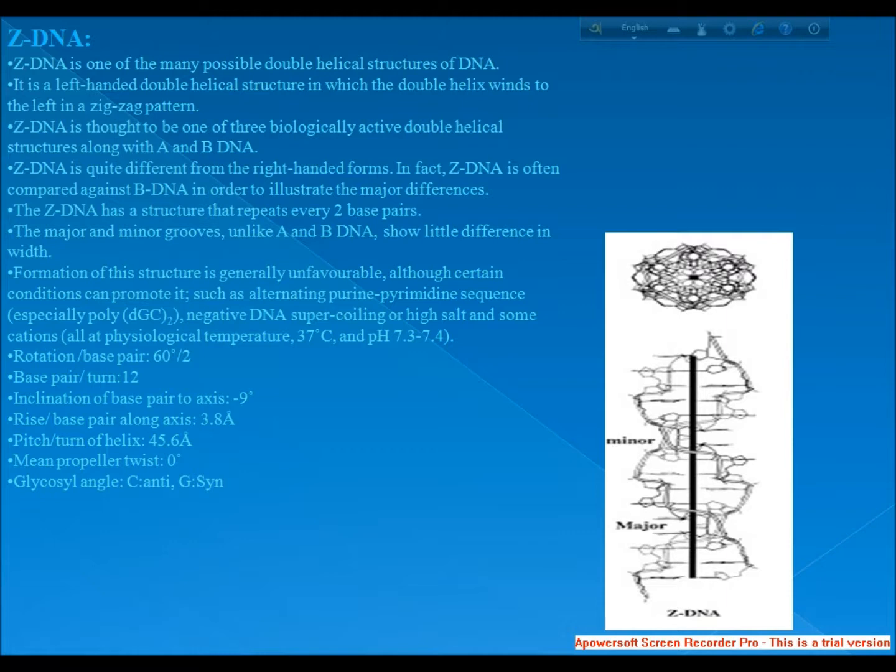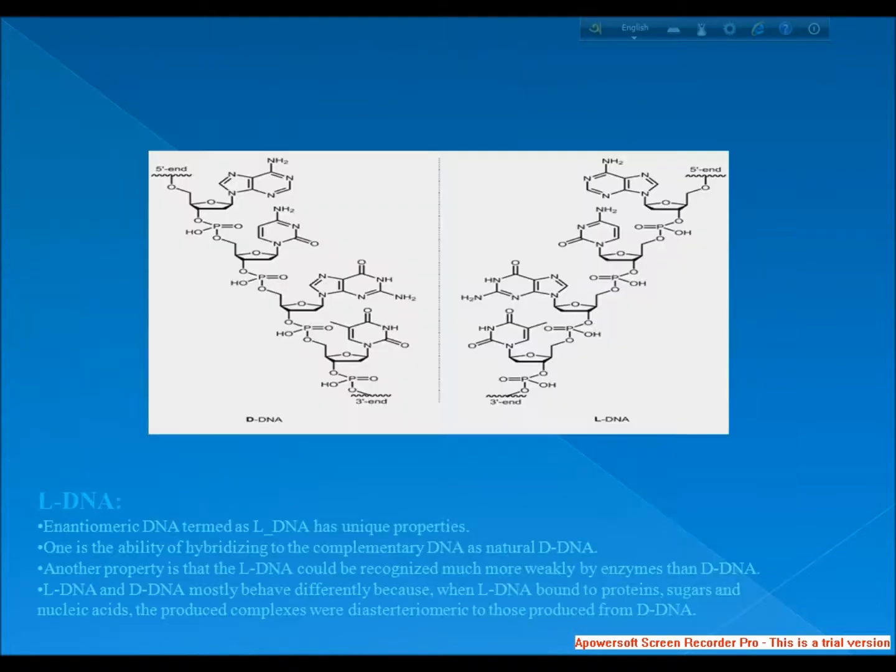At last, I come to L-DNA. Enantiomeric DNA, termed as L-DNA, has unique properties. One is the ability of hybridizing to complementary DNA as natural D-DNA. Another property is that L-DNA could be recognized much more weakly by enzymes than D-DNA. L-DNA and D-DNA mostly behave differently because when L-DNA binds proteins, sugars, and nucleic acids, the produced complexes were diastereomeric to those produced from D-DNA.